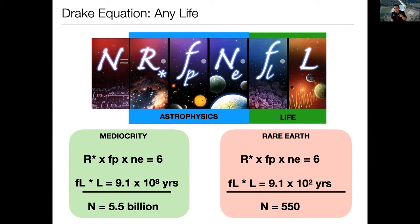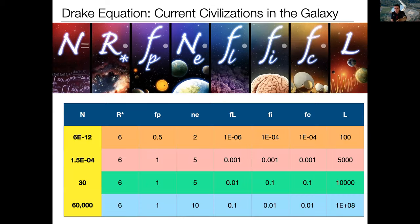The fraction of planets with life — if you're an optimist, and many of you have asked over the quarter whether I'm in the optimistic or rare camp — now that we're at the end of the quarter, I'll confess I'm in the optimistic camp. The number of planets with life could be enormous, which means there's still the possibility that the number of planets with intelligent life could be tens of thousands of planets.